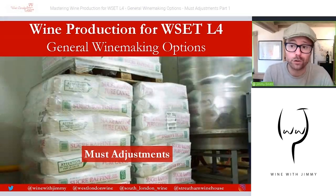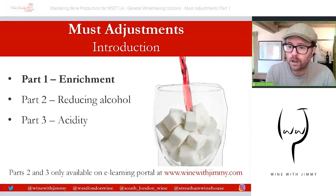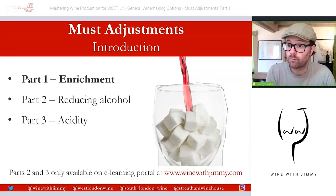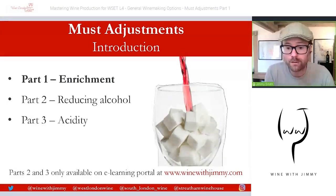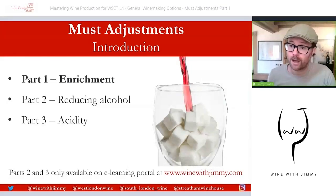We have a picture of bags and bags of sugar in a winery, which will be a consideration for some places in the world. We're going to be looking at three parts to must adjustments: enrichment incorporating chaptalisation, reducing alcohol — a smaller section covering things like reverse osmosis — and then acidity, covering both the addition and subtraction of it. Parts two and three are only available on the e-learning portal at winewithjimmy.com; this part is free content on YouTube.